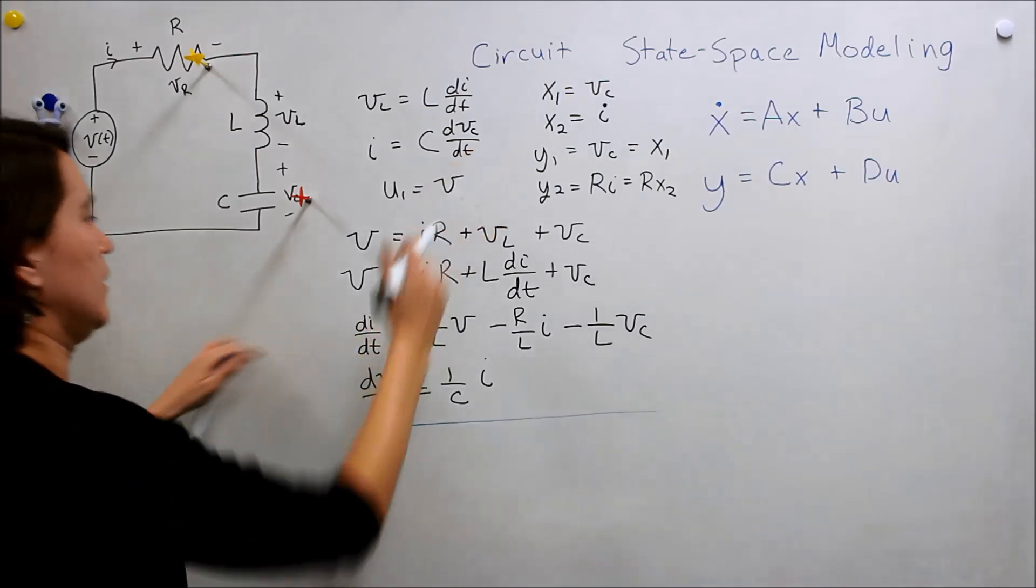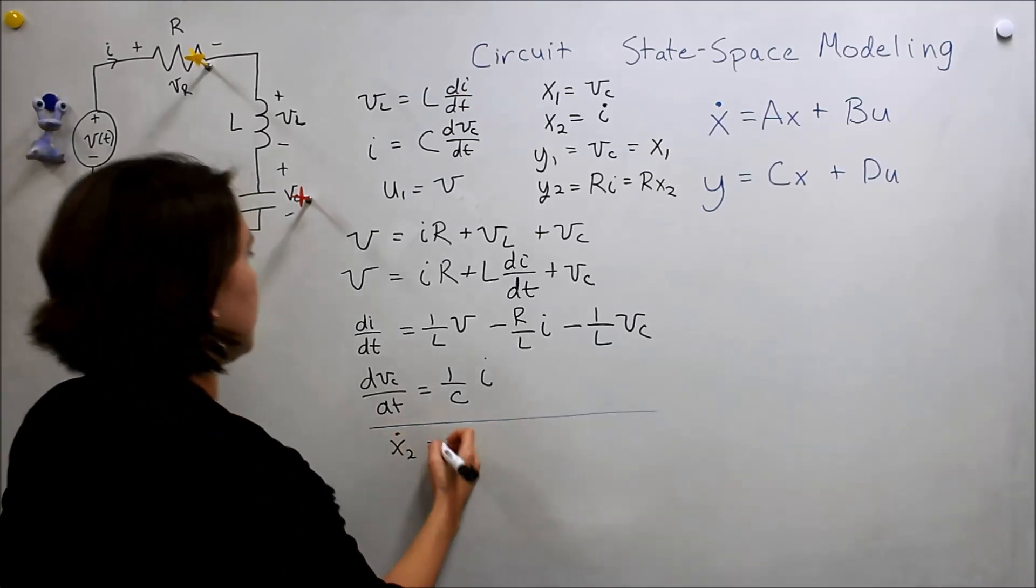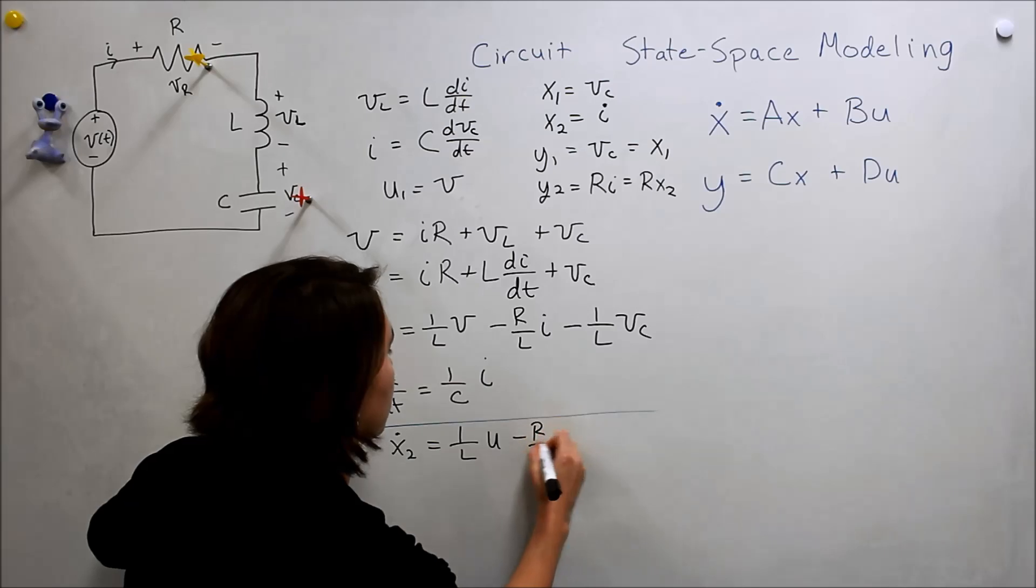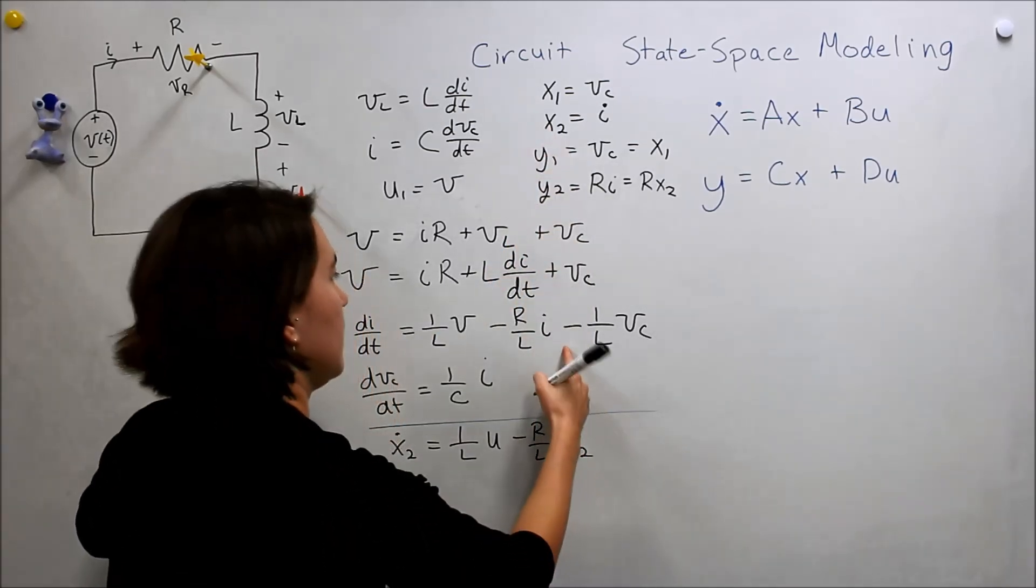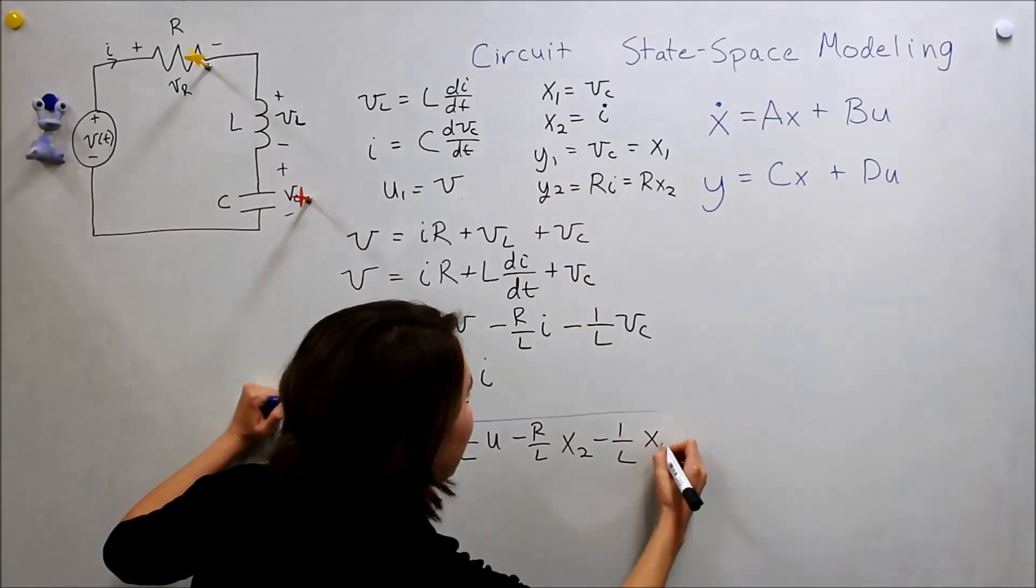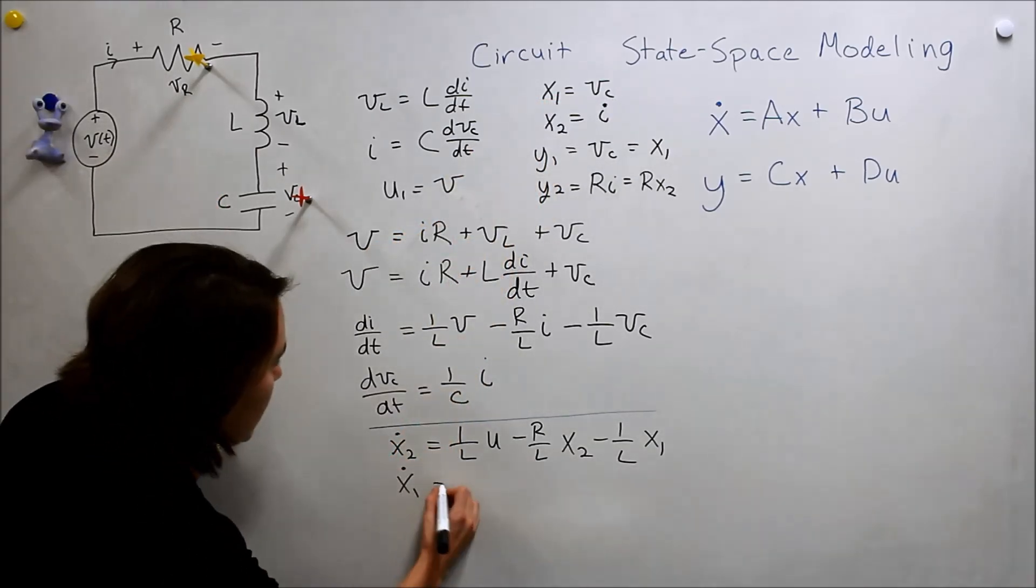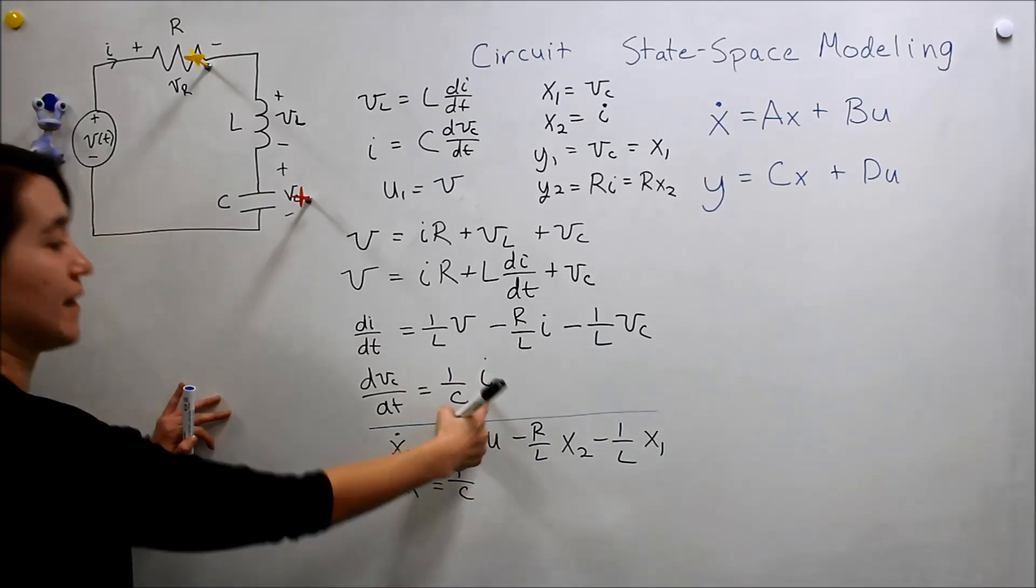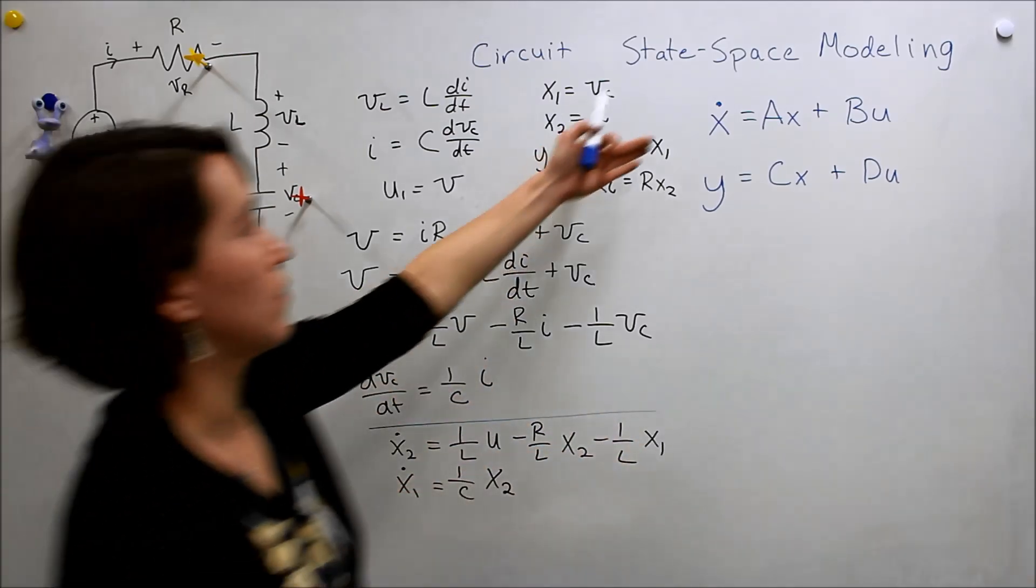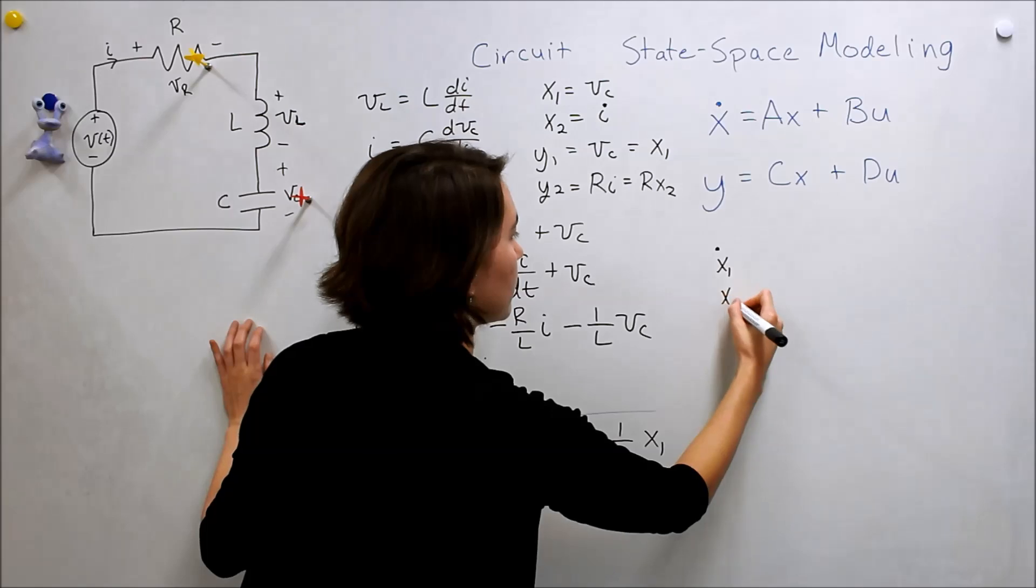So let's have X2 dot is equal to 1 over L times U minus R over L times X2 minus 1 over L times X1. And we'll do the same thing with this one. X1 dot is equal to 1 over C times X2. So looking at this, we can now put this into our matrix form over here. We'll do X1 dot, X2 dot.